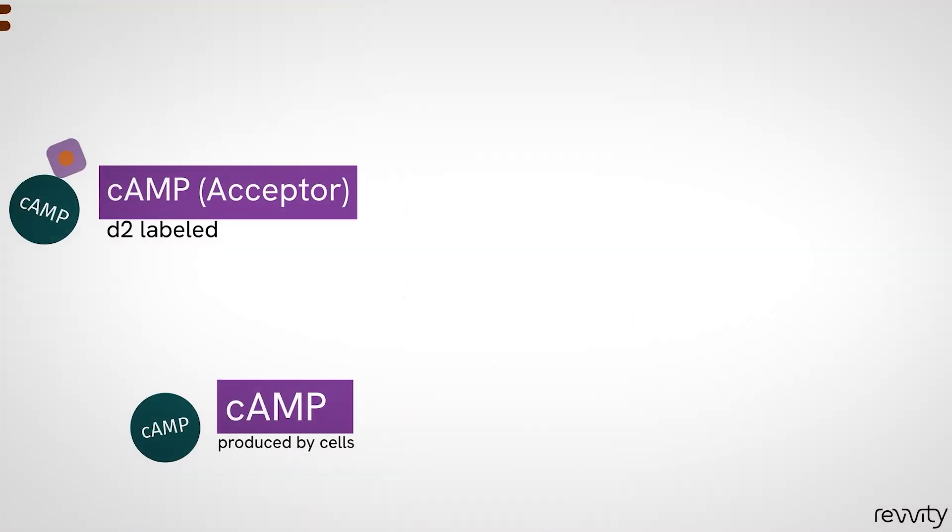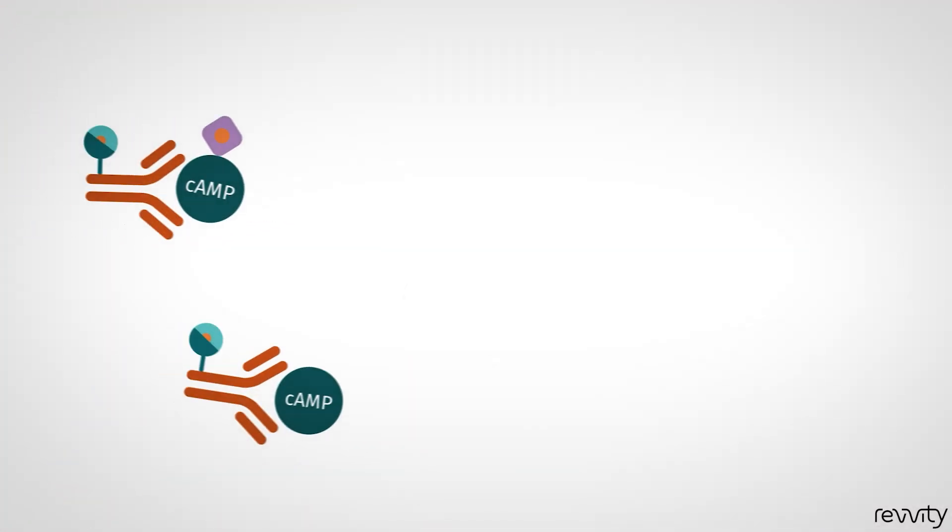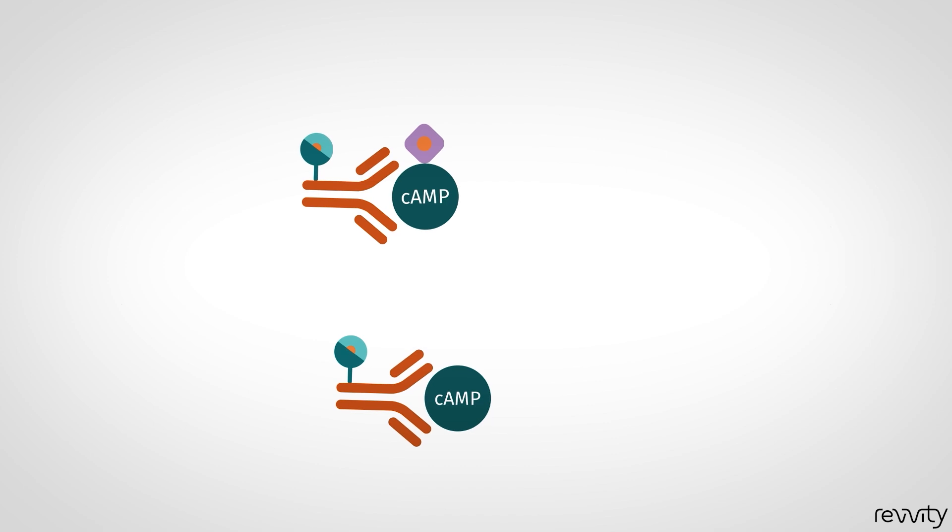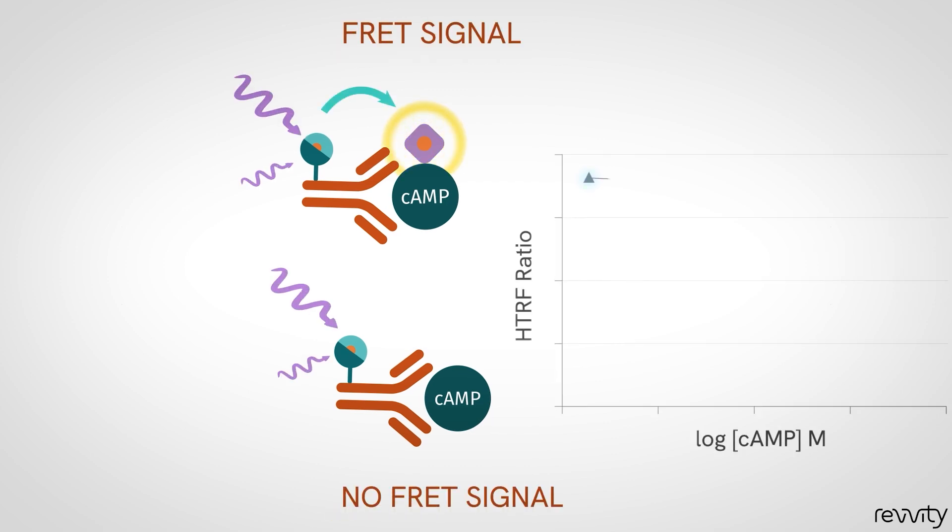How does it work? Cells produce cyclic AMP. It will compete with labeled cyclic AMP to bind the antibody. The more cyclic AMP is produced, the less FRET occurs, resulting in a quantitative decrease in fluorescent signal.